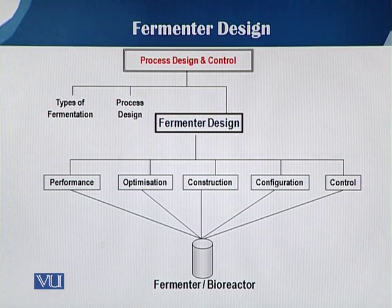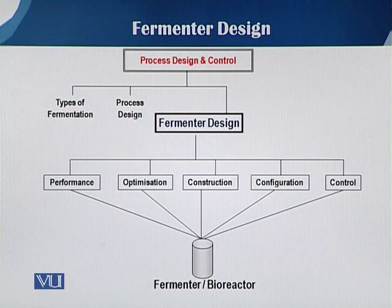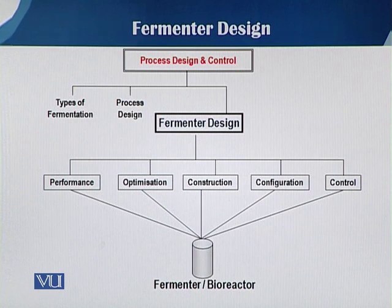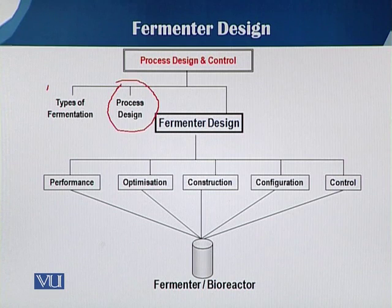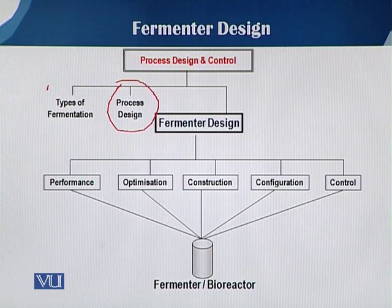If we want to produce any bioproduct through the fermentation process, that whole situation comes under process design and control. The process design and control is further subdivided into the type of fermentation being used — such as solid state fermentation, liquid or submerged fermentation — and the process design, including fed batch, batch, or continuous culture. The major component is the fermenter design itself.